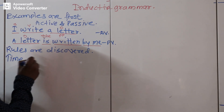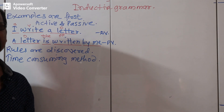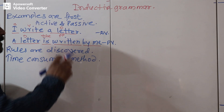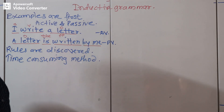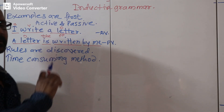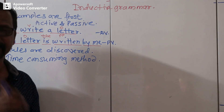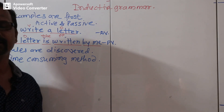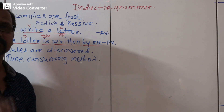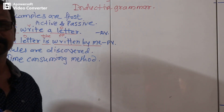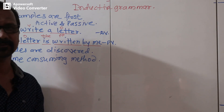The inductive method is called a time-consuming method because many questions and their answers are given, showing how one sentence changes into another form — that is, transformation of sentences. Students observe the examples and find out the rules followed. The teacher then writes only questions and asks students to change sentences into another form; students apply the rules they discovered, and the teacher checks again.